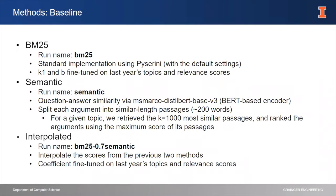Talking about our baselines: one of our first baselines was BM25, which was a standard implementation using the PySirini toolkit with default settings. We fine-tuned the parameters K1 and B on last year's topics and relevant scores. Our next baseline method was a simple BERT-based similarity encoder between a topic and an argument. Because some arguments were longer than the length limit, we split each argument into similar-length passages of about 200 words, and for a given topic we returned the most 1,000 similar passages and ranked arguments based off of the maximum score of its passages.